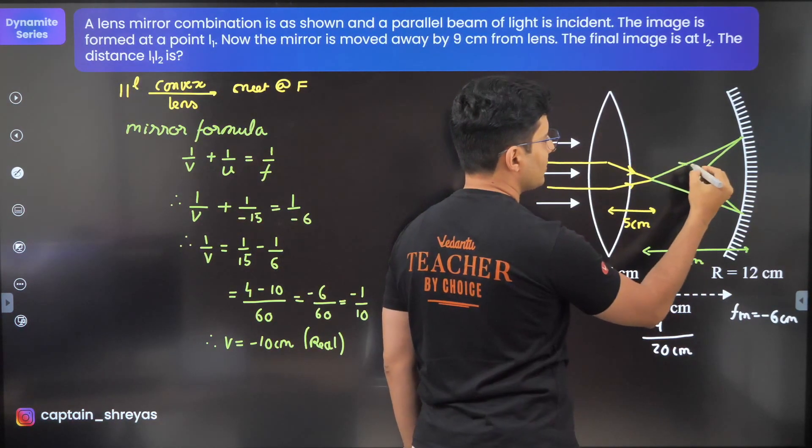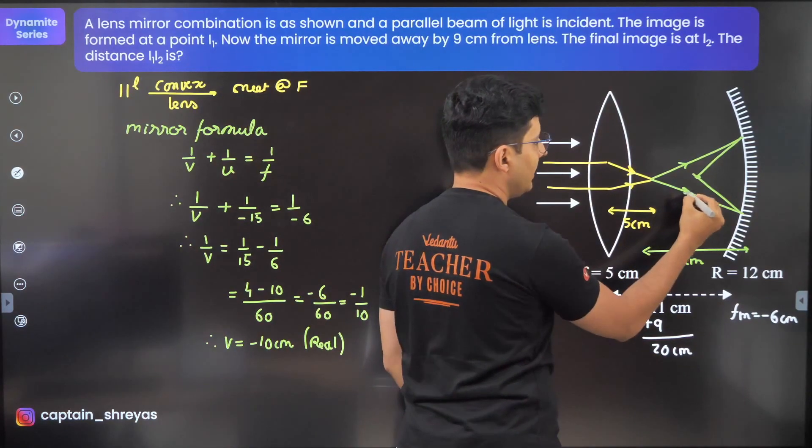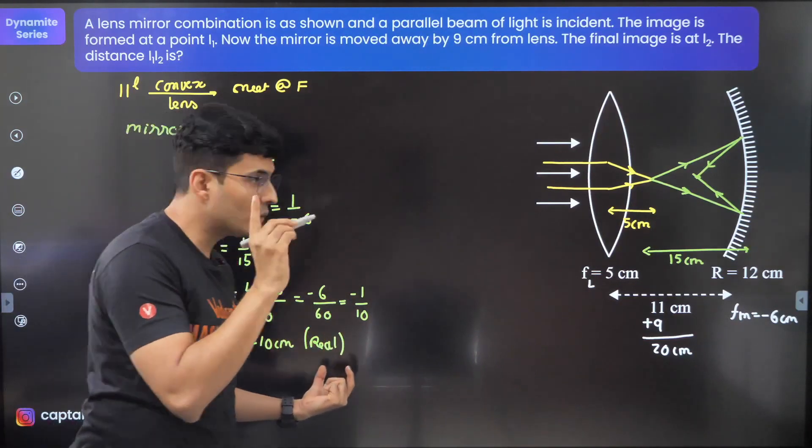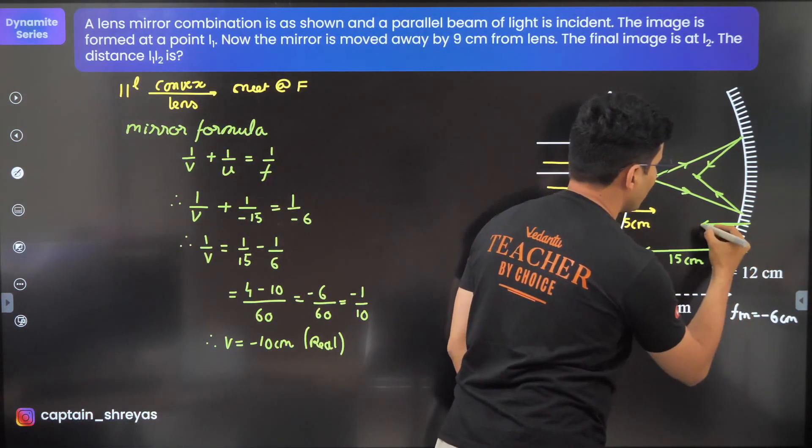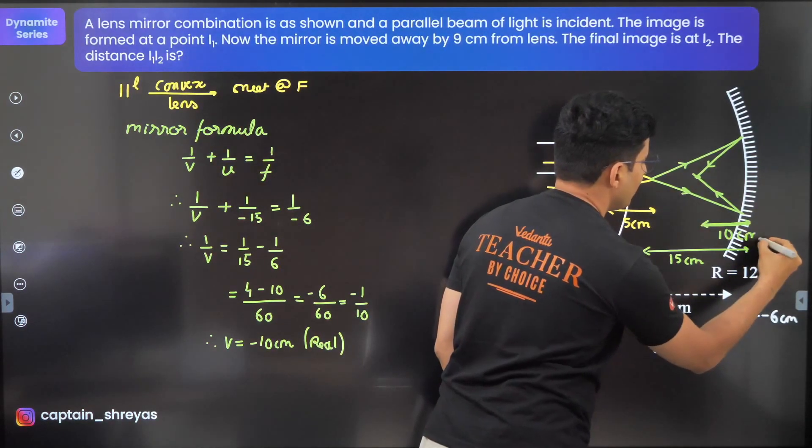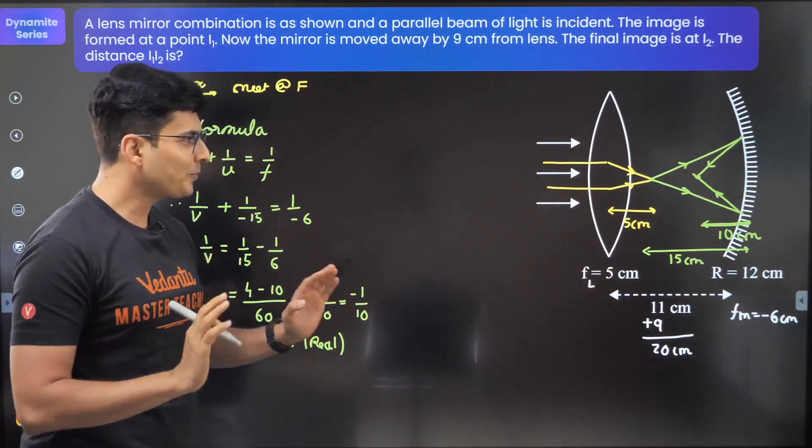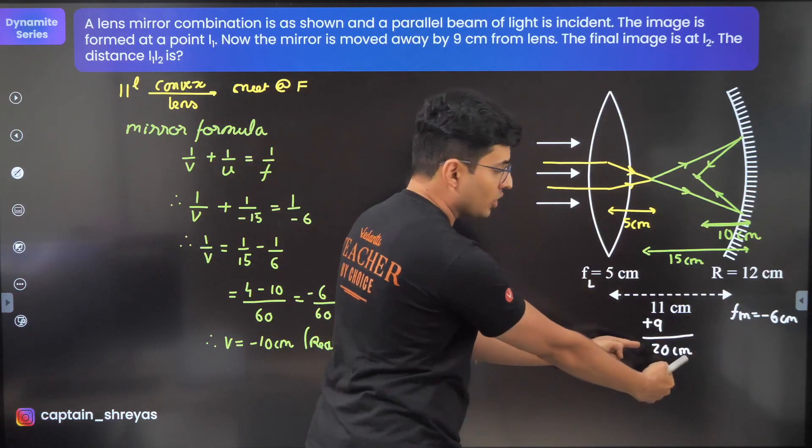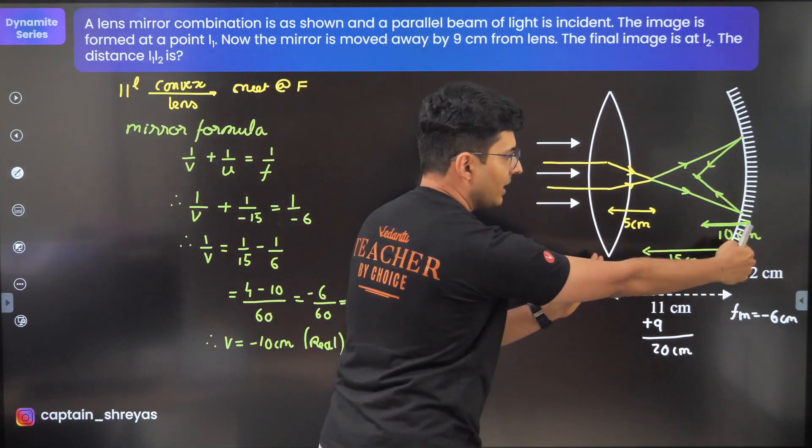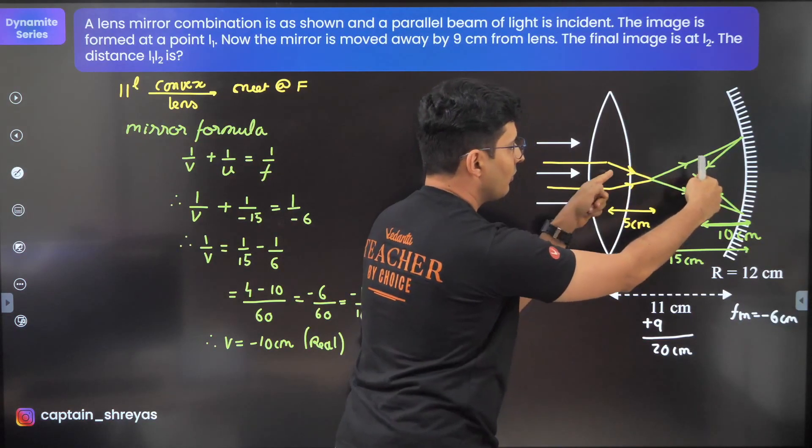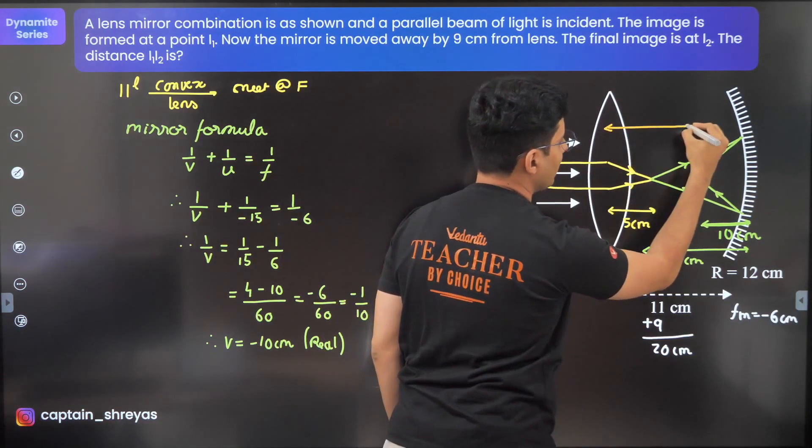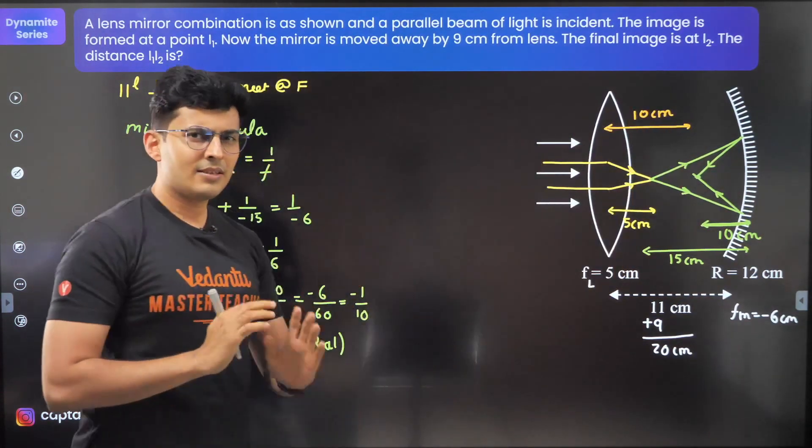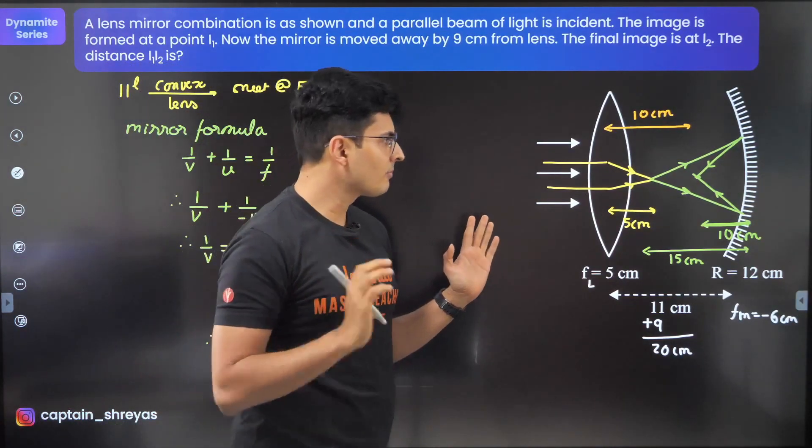This distance we found to be 10 centimeters. Now observe: this whole thing was 20, from here to here was 20. Out of that, 10 went off. From here till here, think about it: 20 minus 10, it's just going to be 10 centimeters.